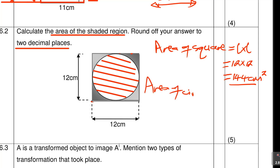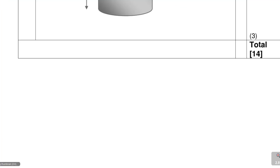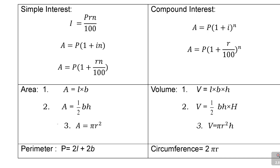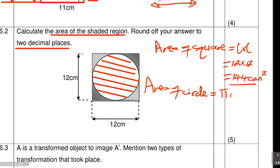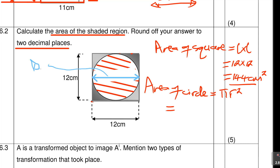Area of circle — let's check the formulas. Number three on the formula sheet is the area of the circle: A = πr². So area of circle = πr². But the diagram gives us the diameter, not the radius, so we need to find r.